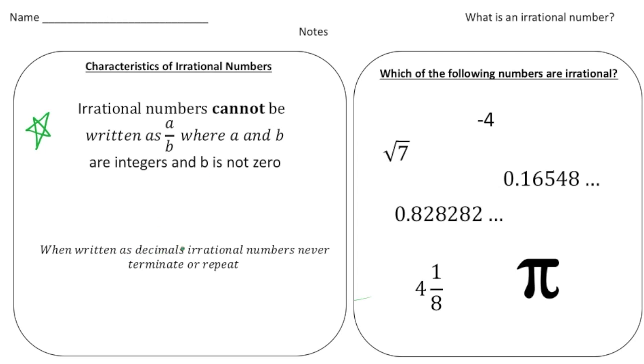When written as decimals, irrational numbers never terminate or repeat. Let me give you some examples of irrational numbers. Let's say we have the number pi. Pi might be the most famous irrational number ever because pi is a number that goes on forever, it doesn't repeat, it doesn't terminate, and that's what makes it irrational.